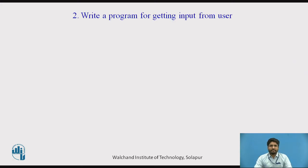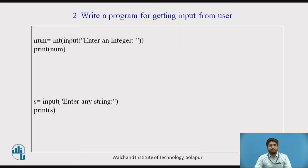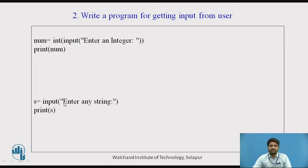We will see the next simple program for getting input from the user. We have already seen a video on input. For integer input, the function would be: num = int(input('Enter an integer')). If you want a data type of integer, it should start with int, then input. For a string input: s = input('Enter any string'). Python automatically takes the first as an integer and the second as a string.